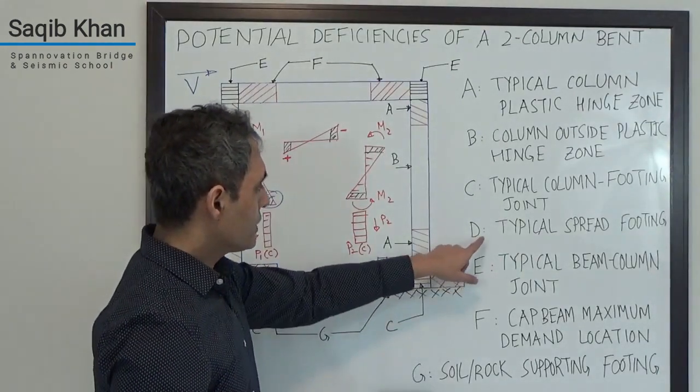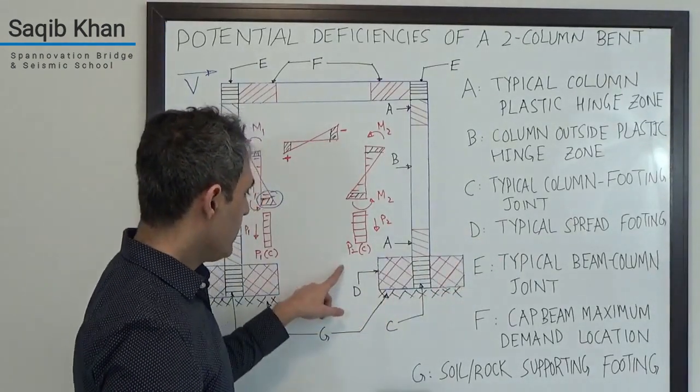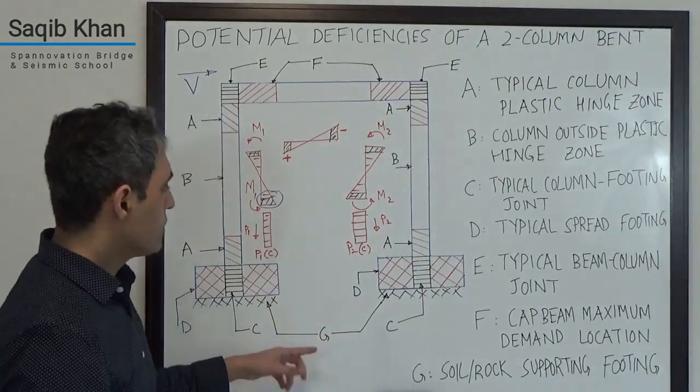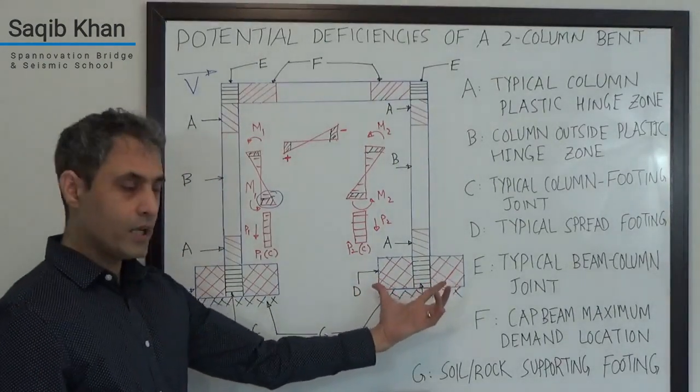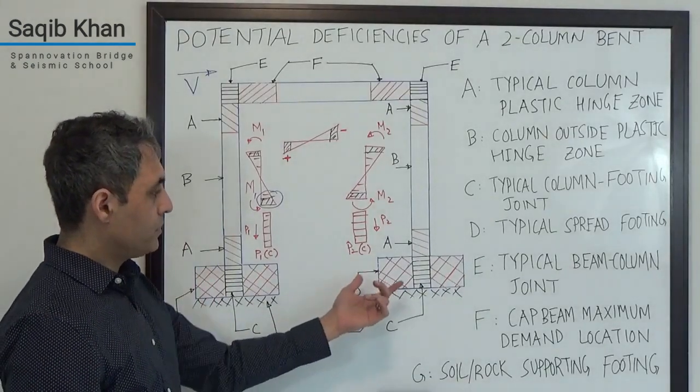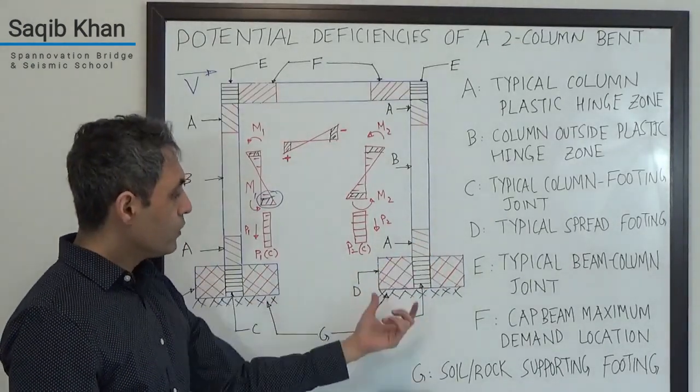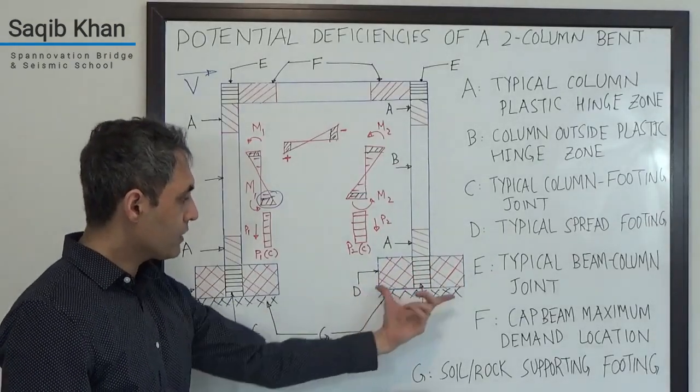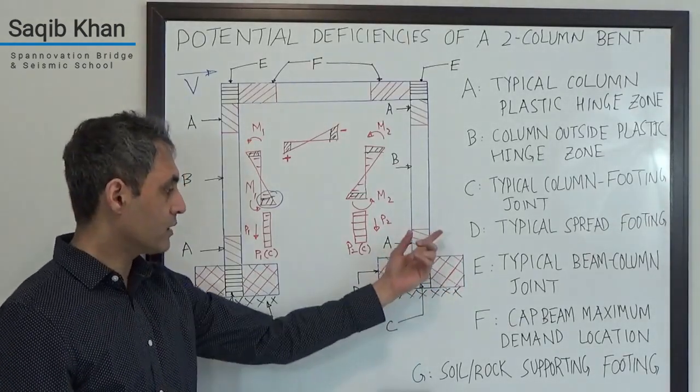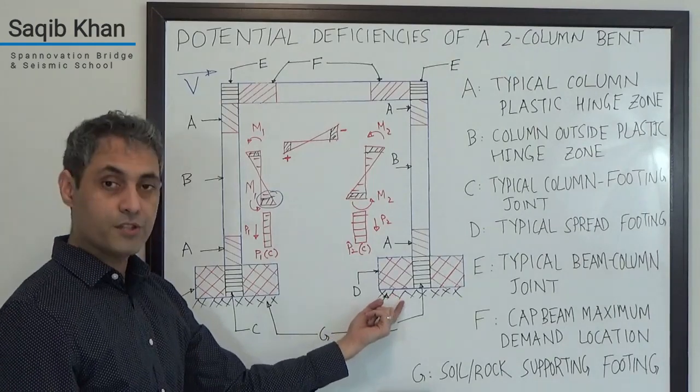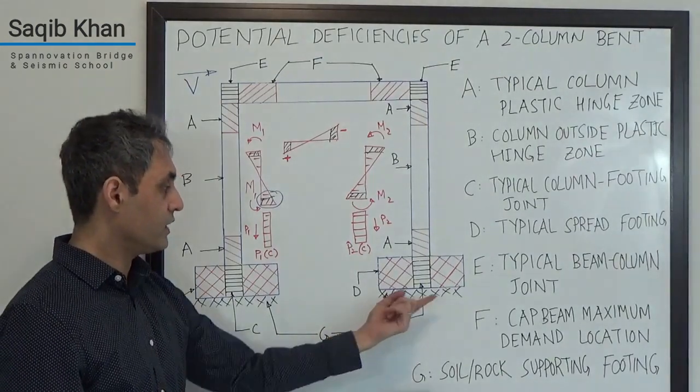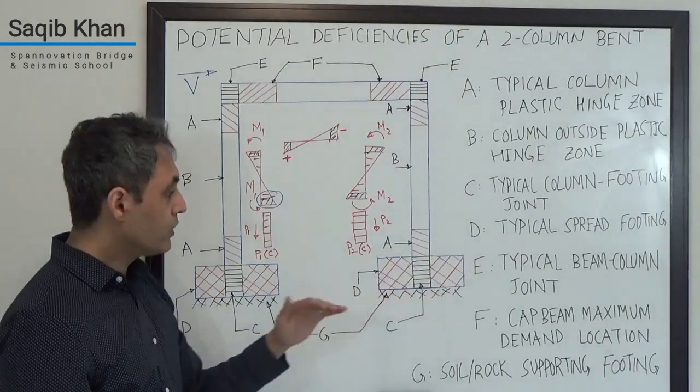Let's talk about the portions D and G. So D is your typical spread footing. Where that comes into play is that, again, we want to have the hinges within the column. We do not want the joint or the footing itself to be weaker than the column because then you can have flexural failure or shear failure of the footing. We do not want that.